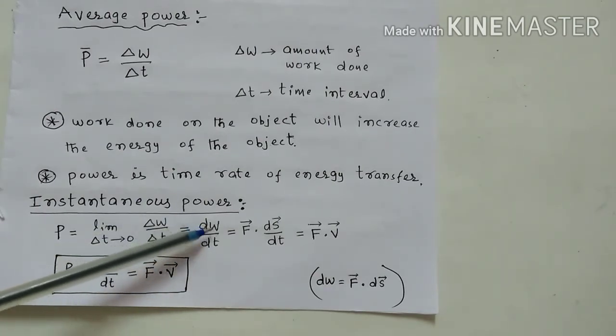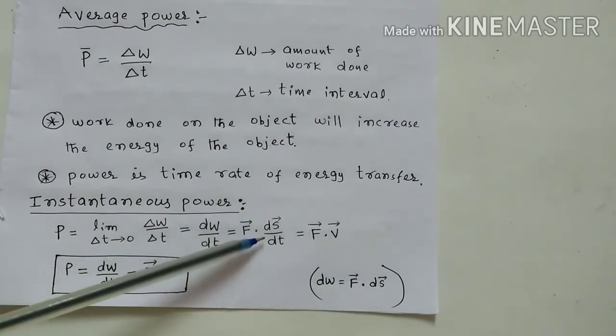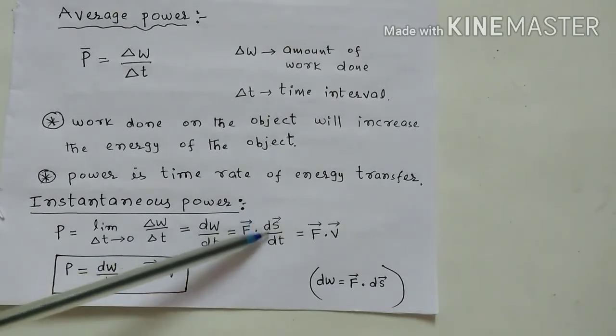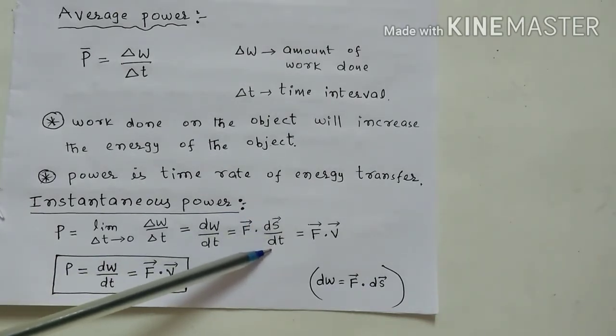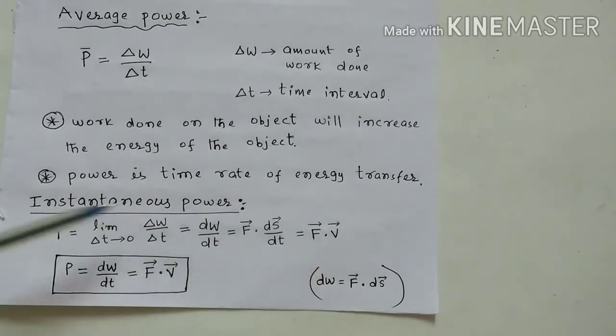So I can write F dot dS by dt. dS by dt is rate of change of displacement, that is velocity. So F dot V. So instantaneous power we can write F dot V.